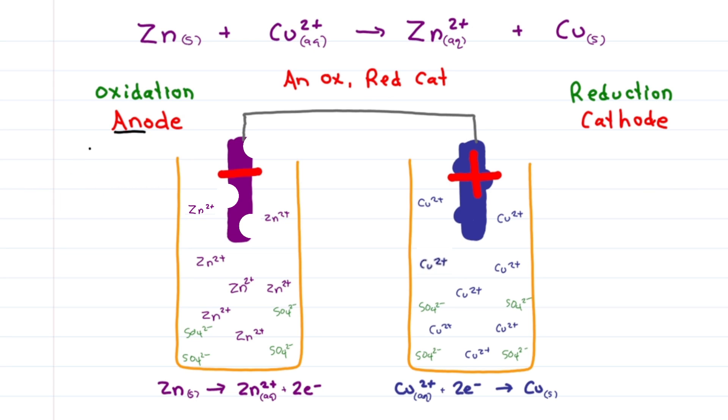I remember it as 'an' meaning without or negative, and the 't' in cathode kind of looks like a plus. This only applies when you're dealing with a spontaneous reaction, as we'll see shortly.